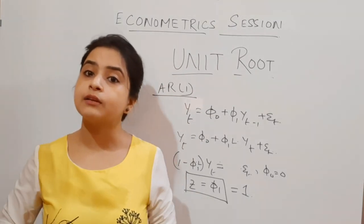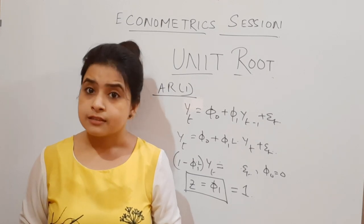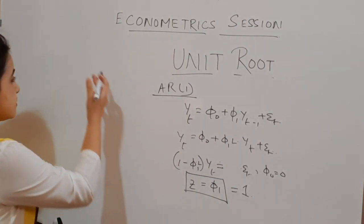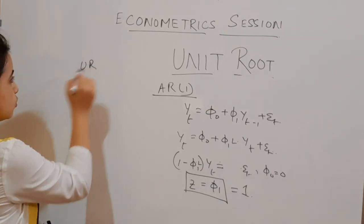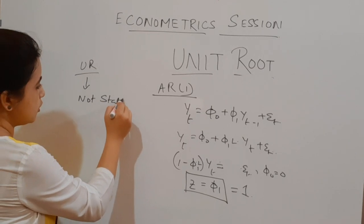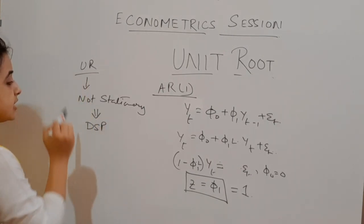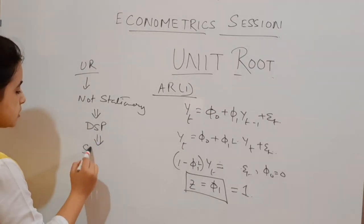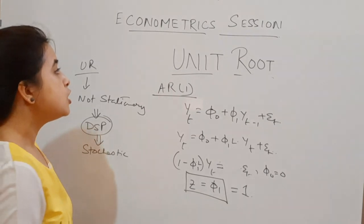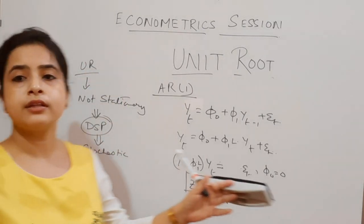If a series is found to have a unit root, what does it imply? Please note very carefully: if there is a unit root, it implies the series is not stationary — it is changing with time. If this is the case, the series is stochastic and it is following DSP — Difference Stationary Process. A stochastic trend is present. This is the implication of the presence of unit root.